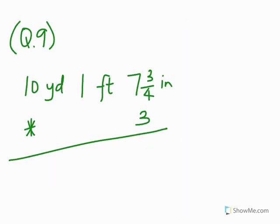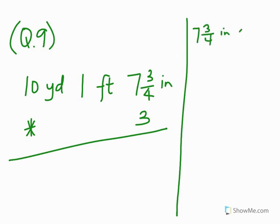Question 9, last but not least. We've got another fraction: 10 yards, 1 foot, 7 and 3/4 inches times 3. So we do 7 and 3/4 inches times 3. Converting to an improper fraction: 4 times 7 is 28, plus 3 is 31 over 4, times 3 gives us 93 over 4.